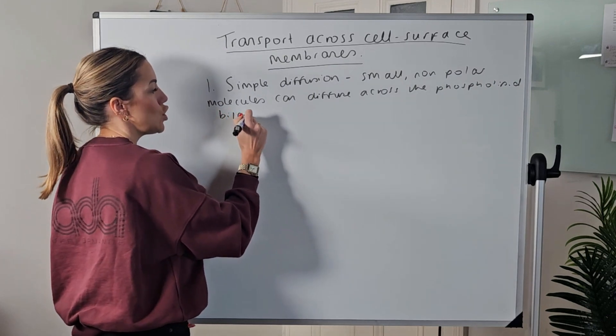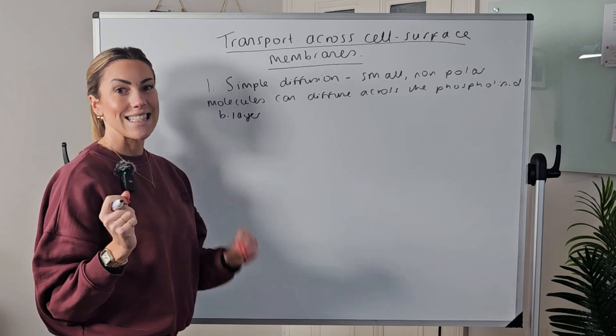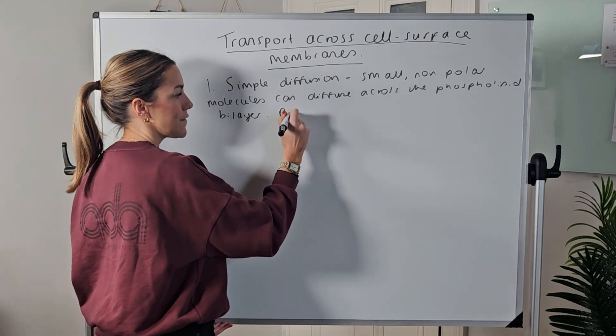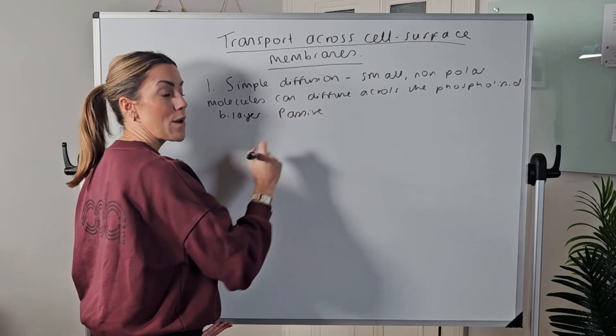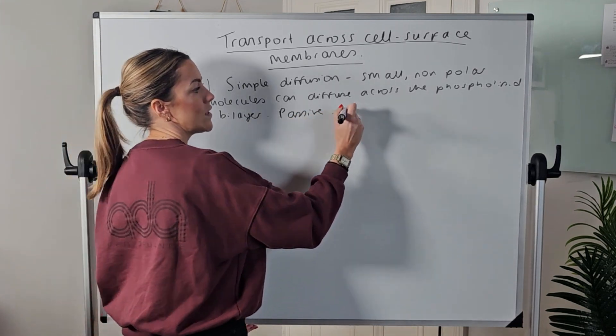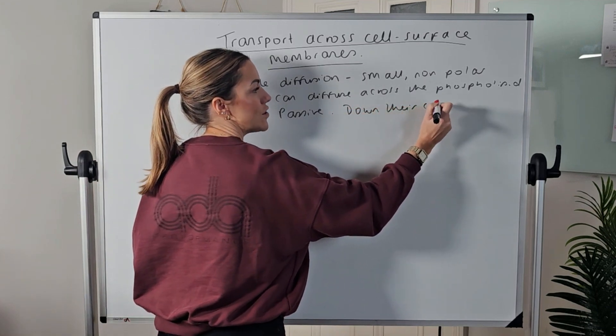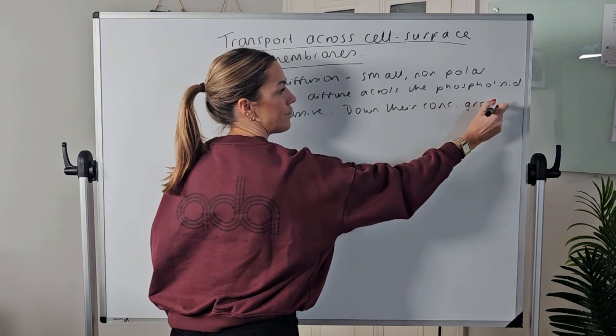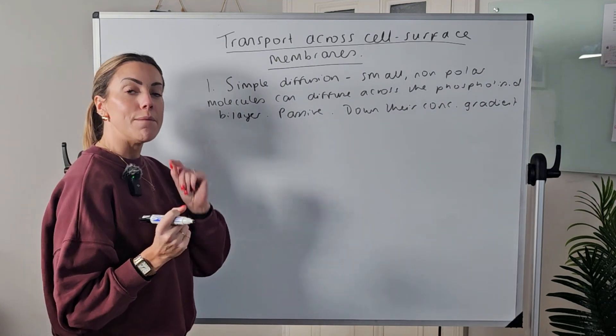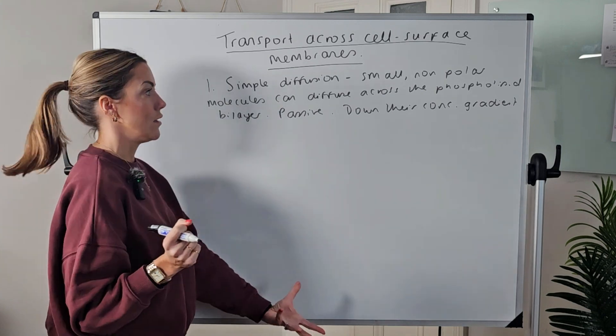They can simply diffuse between those fatty acid tails of the phospholipids and it's passive, so it doesn't require any energy from ATP. These molecules will diffuse down their concentration gradient, which we learned at GCSE, or we can say simple diffusion the molecules move from a higher concentration to a region of lower concentration.